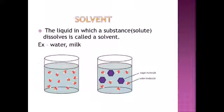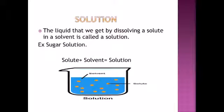Next is solvent. The liquid in which a substance or solute dissolves is called a solvent. Since sugar dissolves in water, sugar is the solute and water is the solvent. If we dissolve sugar in milk, then milk will be the solvent. Next is solution — the liquid we get by dissolving a solute in a solvent is called a solution. For example, sugar solution: sugar is the solute, water is the solvent, and mixing them gives us the solution — sugar solution.